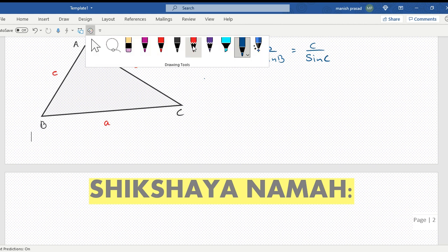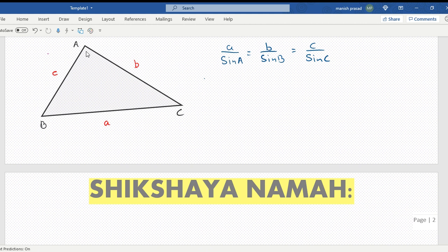And then we have our cos rule. Our cos rule becomes: cos A, if it is cos A, it will become B square plus C square minus A square divided by 2BC. And cos B will become A square plus C square minus B square divided by 2AC. And cos C would become A square plus B square minus C square divided by 2AB. So you all can jot the formula down.